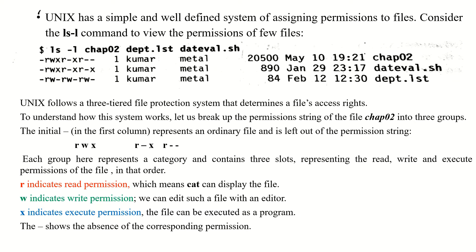The first column in the above output represents file permissions. These permissions differ for the three files. Unix follows a three-tier file protection system that determines file access rights. Breaking up the permission string of the file chop2 into three groups, the initial character indicates the file type and is left out of the permission strings.